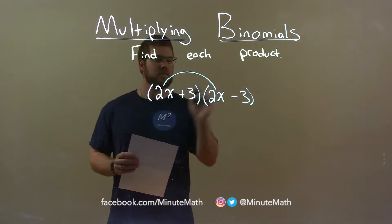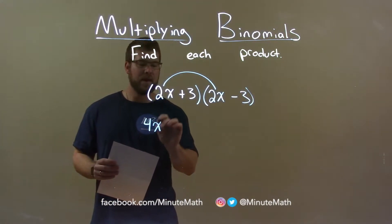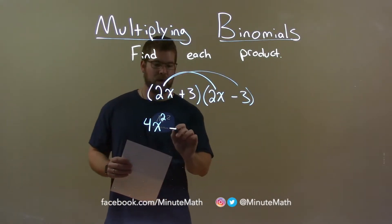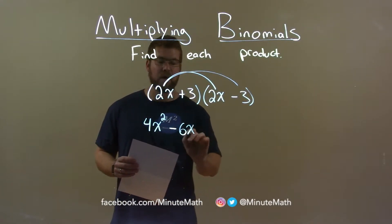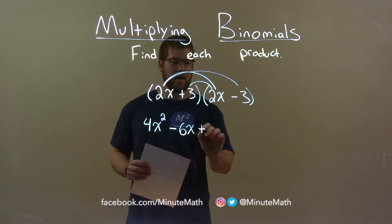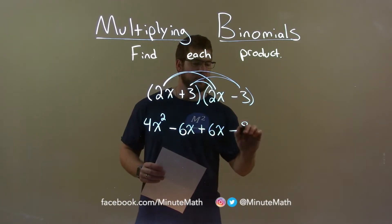2x times 2x is 4x squared. 2x times minus 3 is minus 6x. 3 times 2x is positive 6x, and 3 times minus 3 is minus 9.